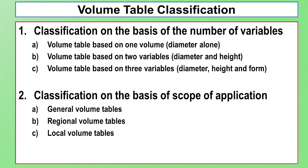Volume table classification is on the basis of number of variables. Volume tables can be prepared with one variable, two variables, or three variables. One variable is diameter only. Two variables are diameter and height. Three variables are diameter, height, and form.